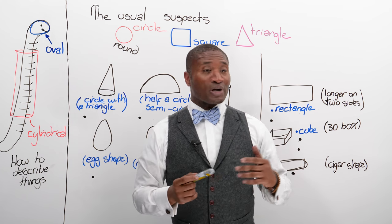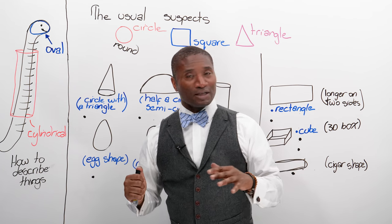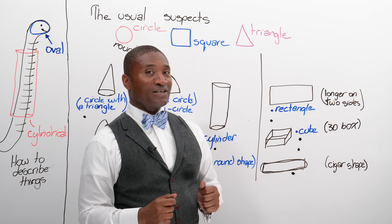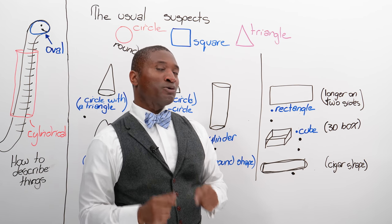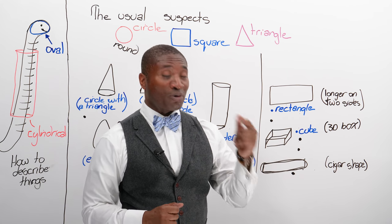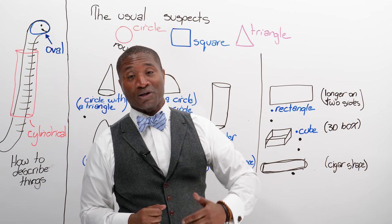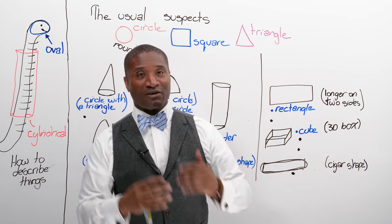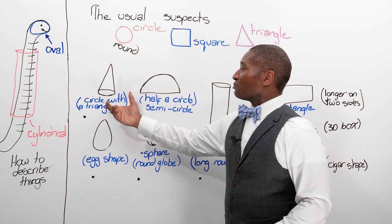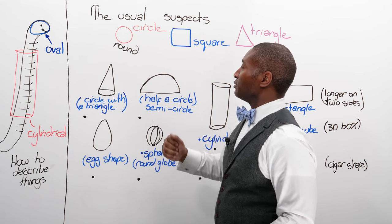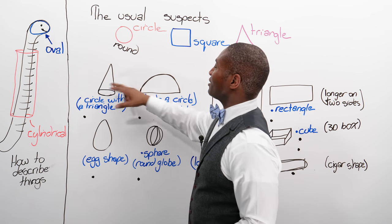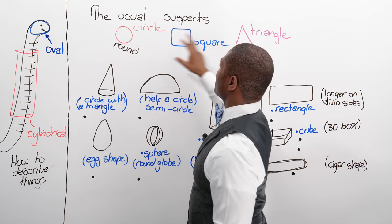I'm going to try and give you as much as I can, using objects you might find in the real world that you use every day, so you can go, 'Wow, these strange words have real meaning.' So let's look at the first one: a cone. It's a circle with a triangle.